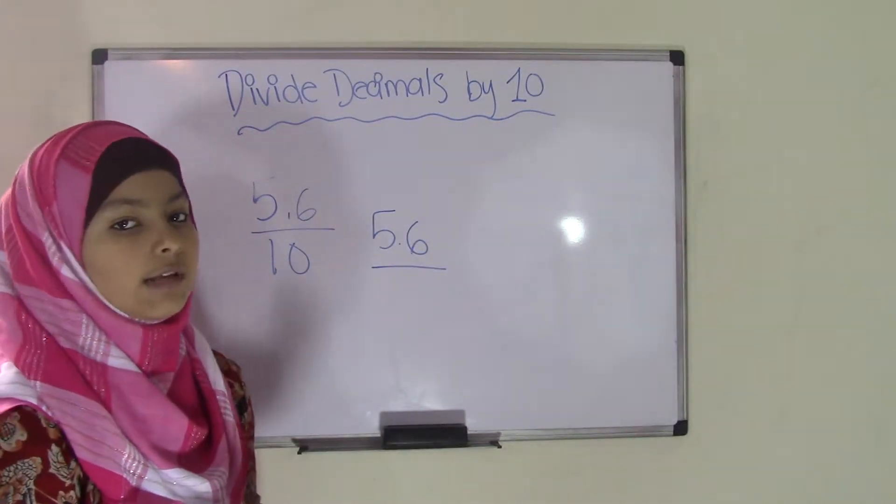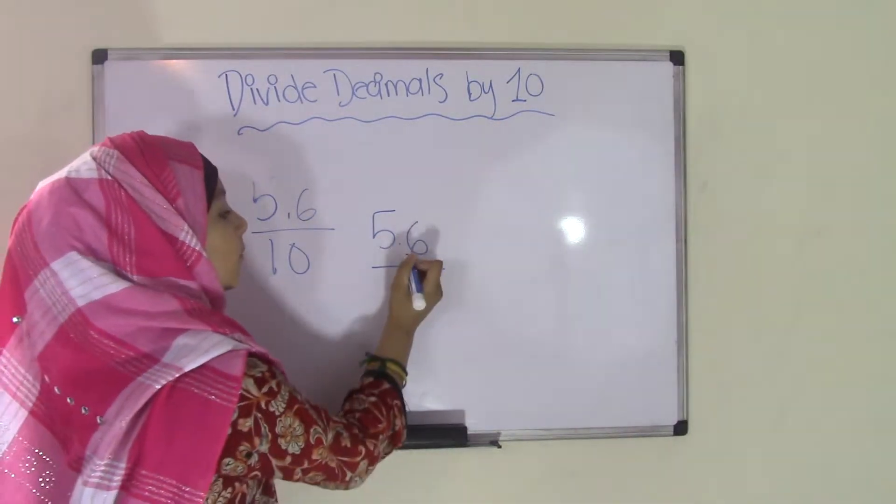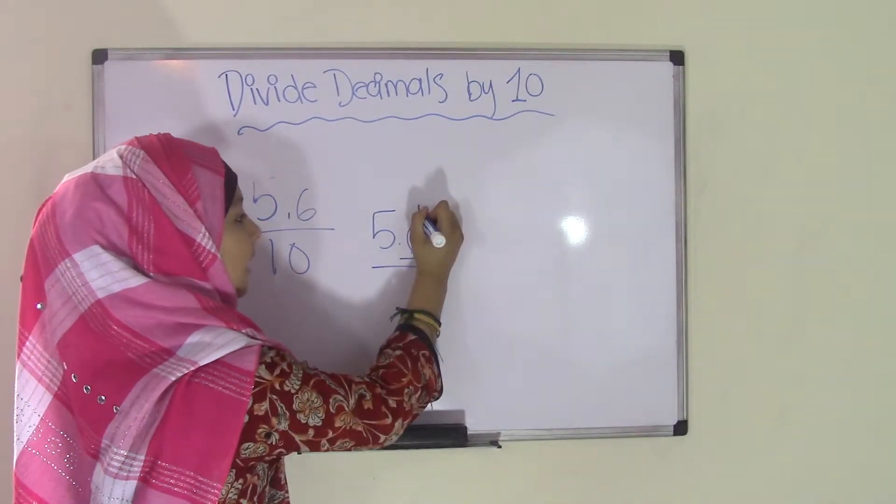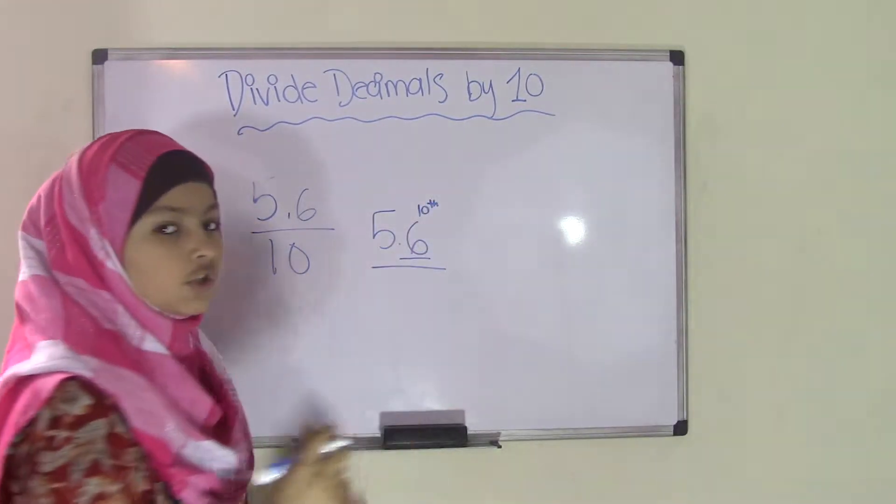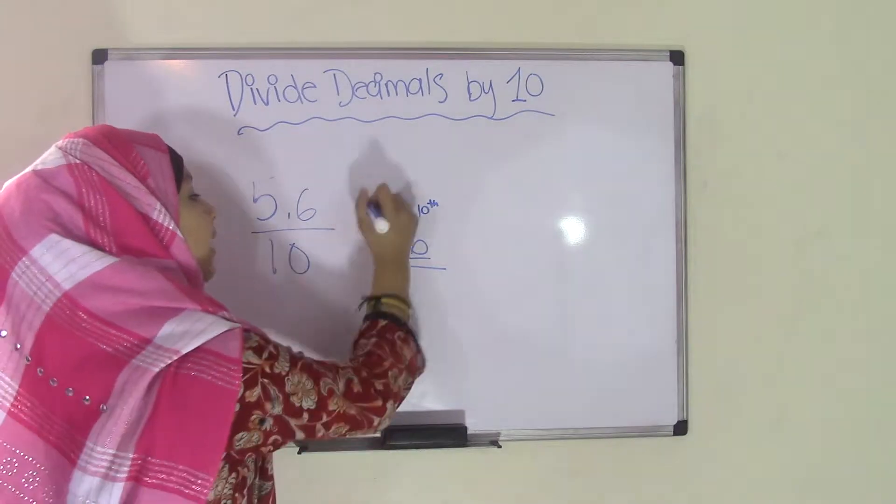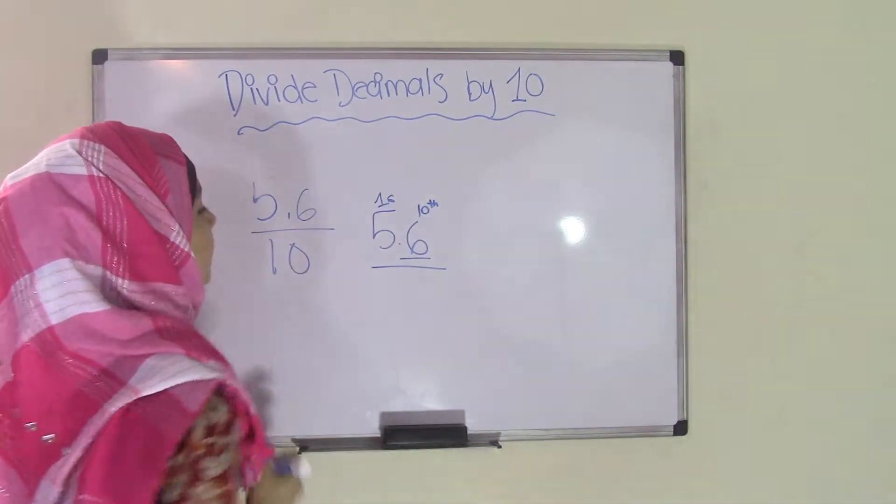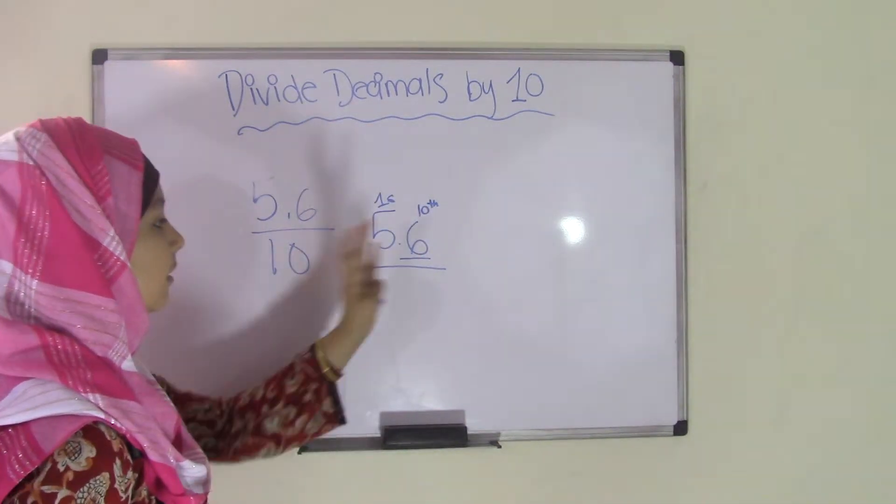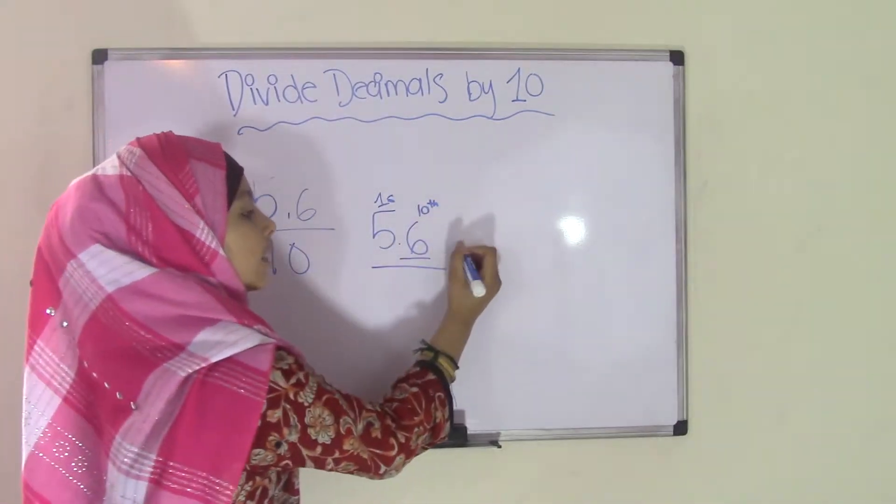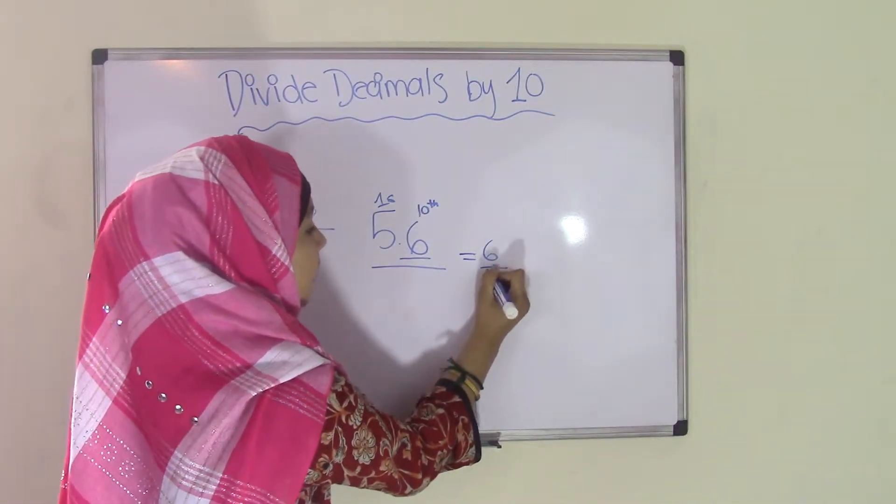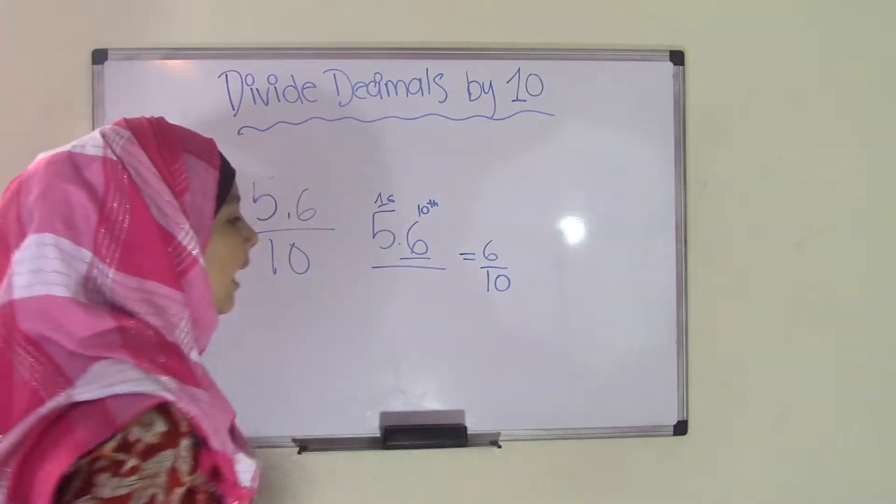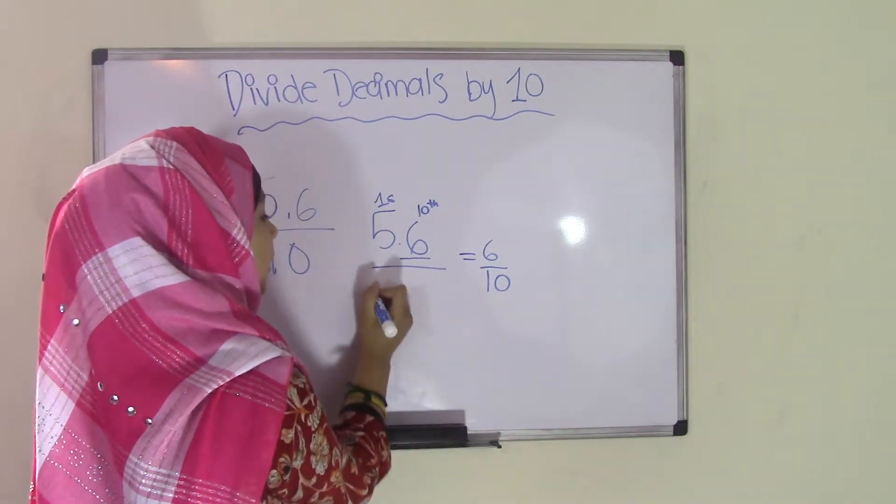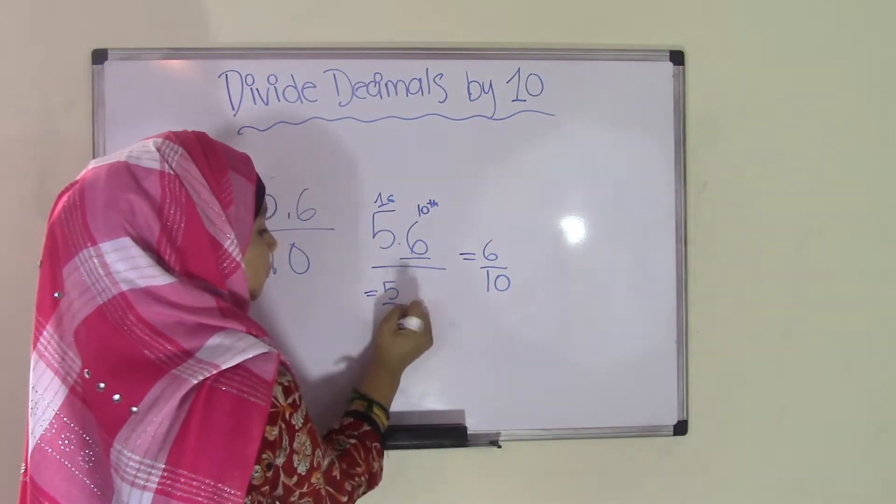Now, list the place values for each of the numbers. The 0.6 is in the tenths place, and the 5 is in the ones place. That means that the 6 tenths can also be written as 6 over 10, and the 5 ones can also be written as 5 over 1, or 5.